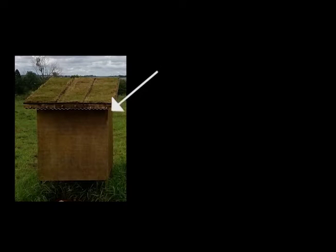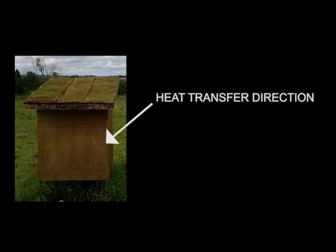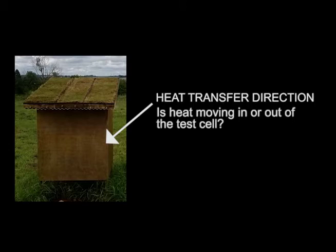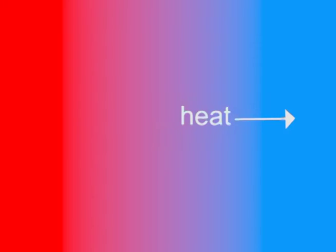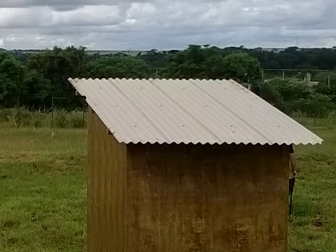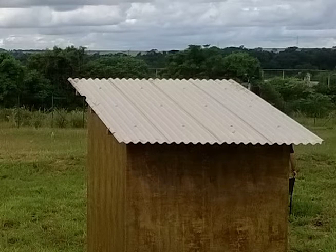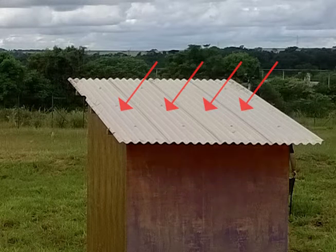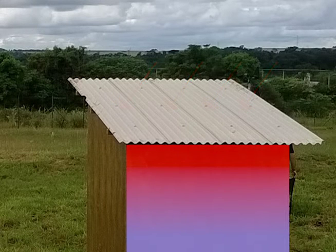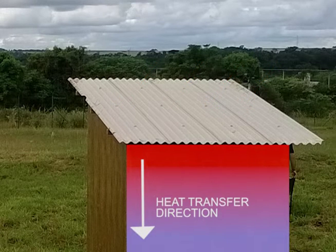We measured the roof and the indoor temperatures to establish the heat transfer direction. This heat energy has to go from higher to lower temperature. If you take a test cell with no green roof, the heat radiation hitting the roof is used entirely to warm its surface, promoting a downward heat transfer inside the unit.